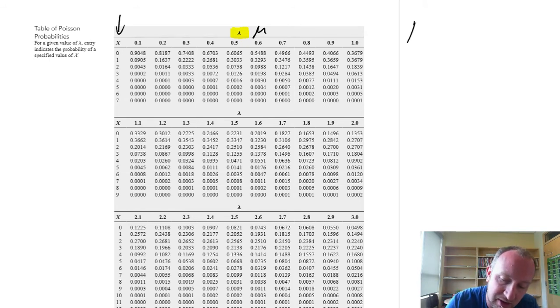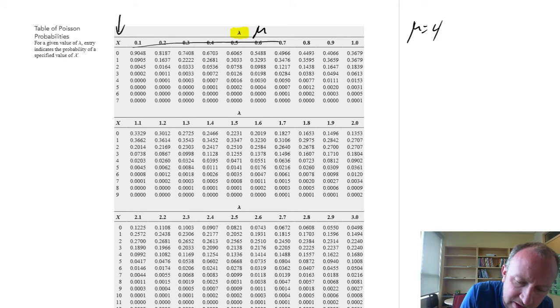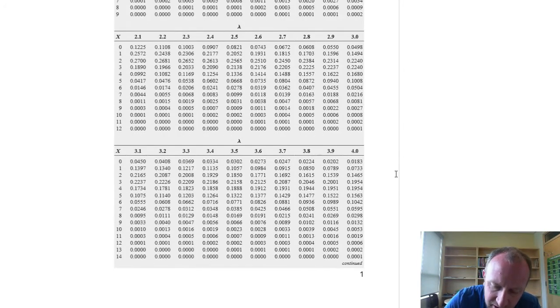So I need to find where is our mean. Remember, we're working with a mean of 4. So we scan down all of these. I'm looking across these values here, and this goes to 2. Okay, I come down. Okay, here is our mean of 4.